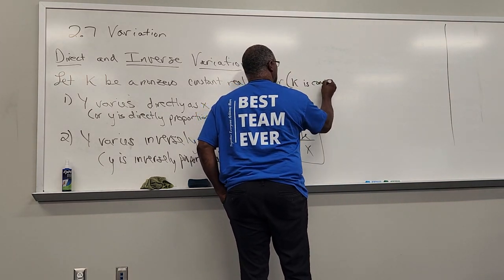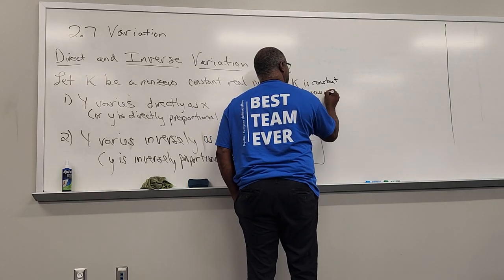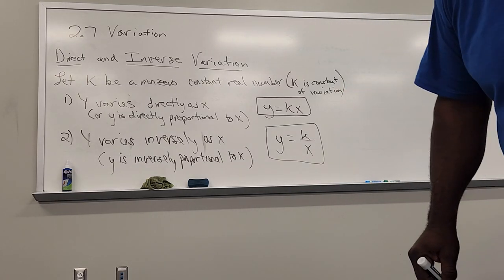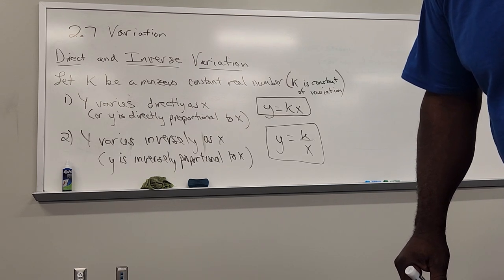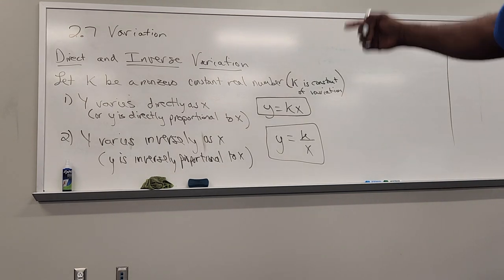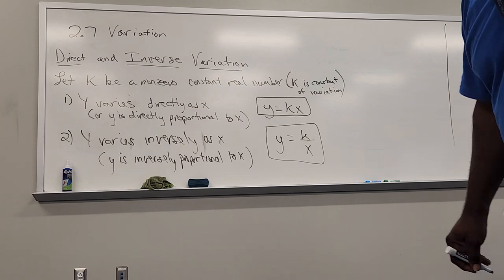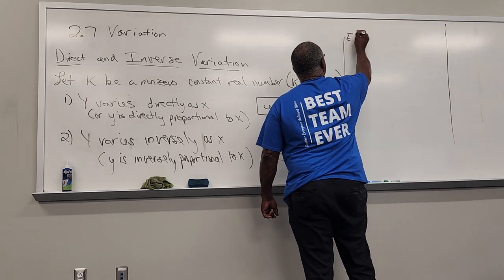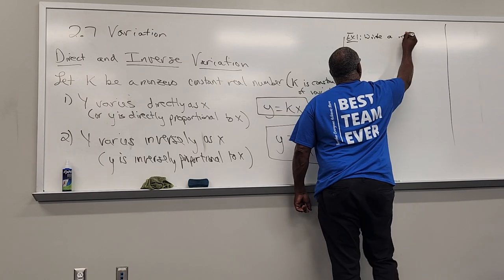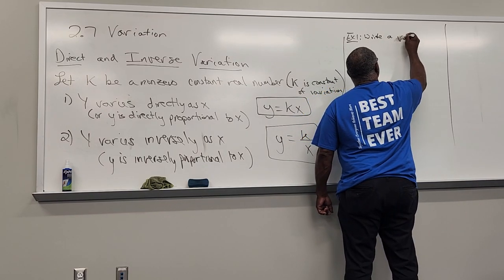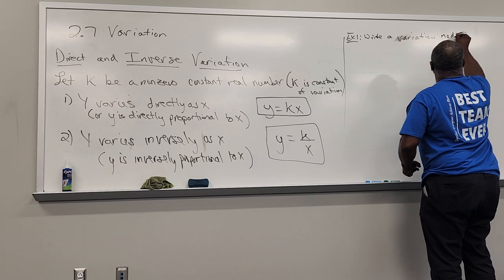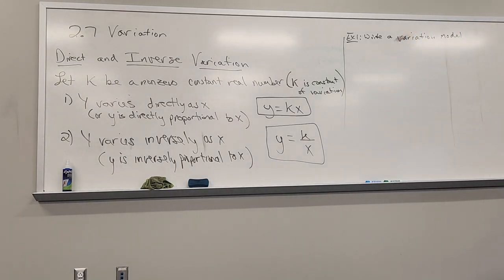With that in mind, we have to read the problem, interpret it, and write it in one of those two forms. Example one says: write a variation model using k.